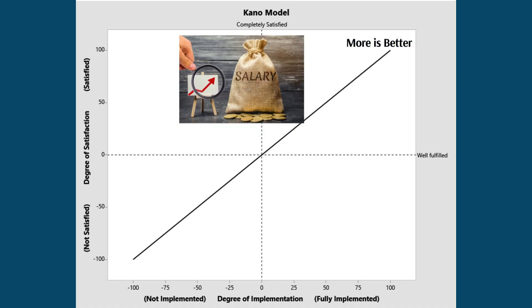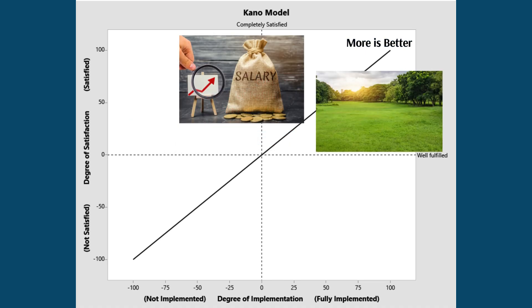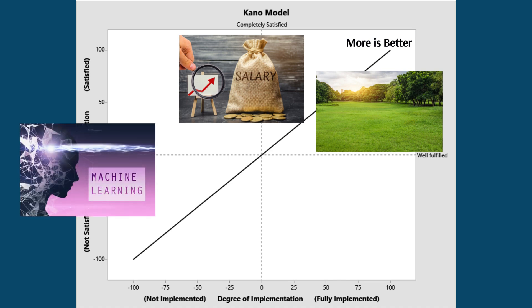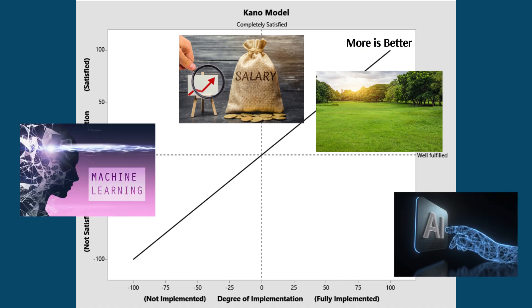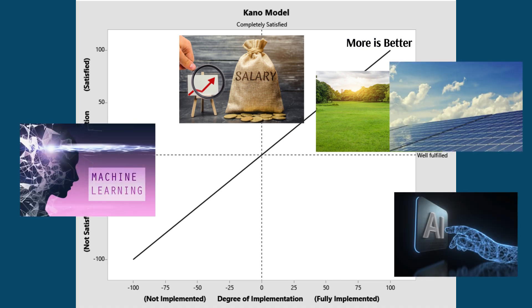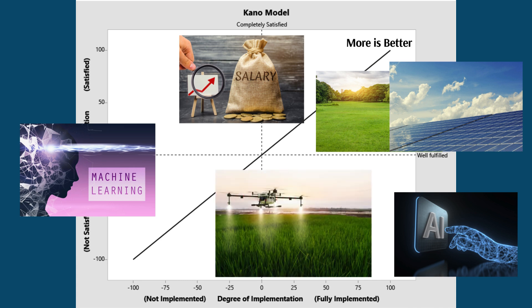Examples of performance requirements are salary, a large enough quantity of city parks, AI/ML to a point, efficient energy sources, and drone activities and what they're able to do. Notice that fully satisfied and fully implemented on the x-axis leads to higher performance. Some of these could also be reverse requirements, which we'll discuss later.